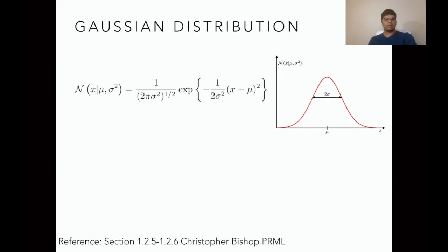Before discussing the curve fitting problem, let's first define the Gaussian distribution. The Gaussian distribution in a univariate case for a random variable x, given mean mu and variance sigma squared, is defined as the product of 1 by square root of 2 pi sigma squared and exponential of negative 1 by 2 sigma squared and the difference between x and mu squared. In univariate case, the Gaussian distribution is centered around mean mu and has a standard deviation of sigma, and formally it is written as normal distribution over random variable x for given mu and sigma squared.